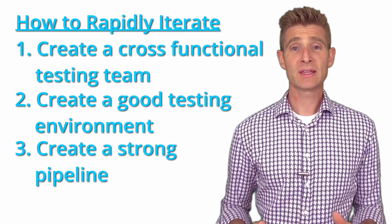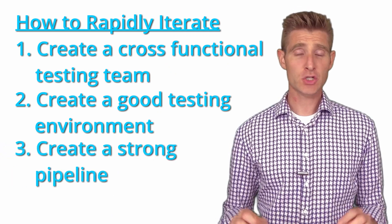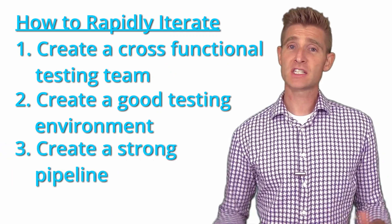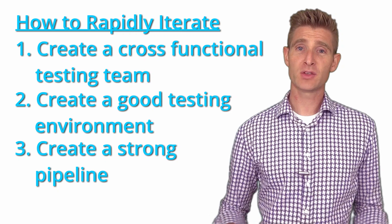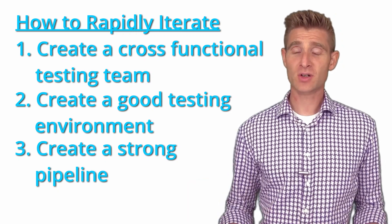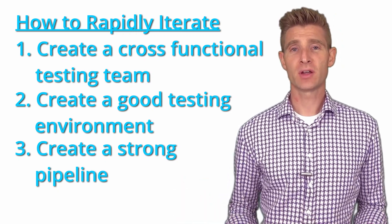The third thing you can do to rapidly iterate is to create a strong pipeline. When you have lots of tests flowing through the pipeline, you're able to go faster because those tests build on each other. Creating a good pipeline usually requires a good culture of optimization where people are contributing ideas and you have a strong team. Getting those efficiencies as you do more tests allows you to go faster.